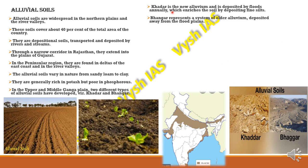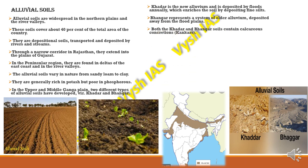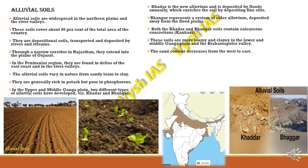Khadar soil will be near the river on either side, whereas Bhangar will be a little further away, as new soil replaces the old and forms a new top layer. Both Khadar and Bhangar soils contain calcareous concretions called kankars. These soils are more loamy and clayey in the lower middle Ganga plains and the Brahmaputra Valley due to higher moisture content. The sand content decreases from west to east.